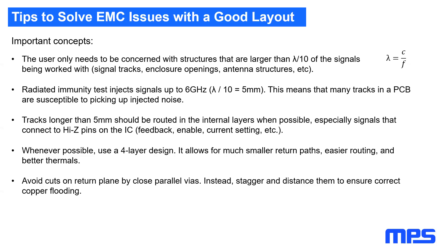Avoid cuts in the return plane by close parallel vias — instead stagger-distance them to ensure correct copper flowing. Conductors and vias should be completely enclosed in copper. A Faraday cage with GND is good. Alternatively, use a constant low-resistance potential, for example a DC supply voltage — it's also a stable voltage.